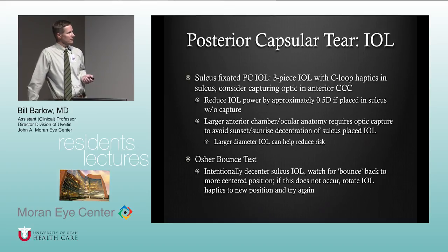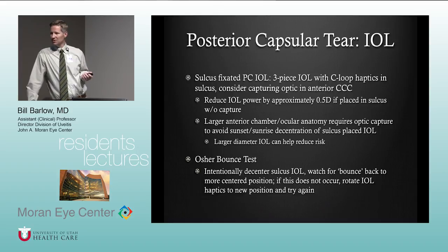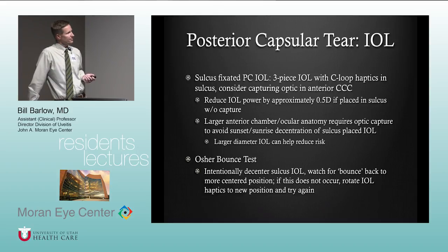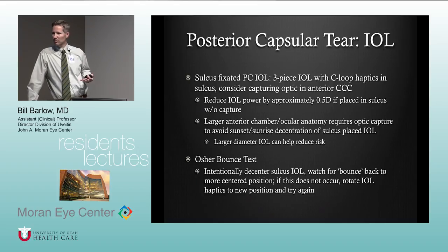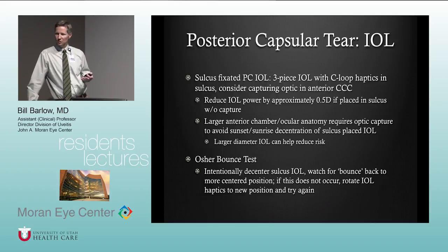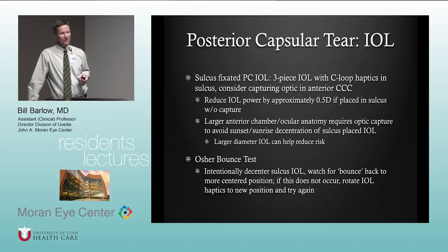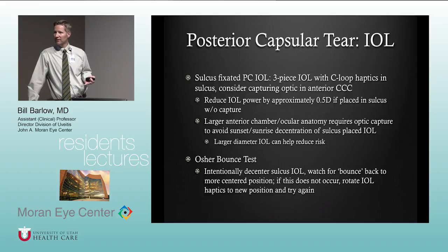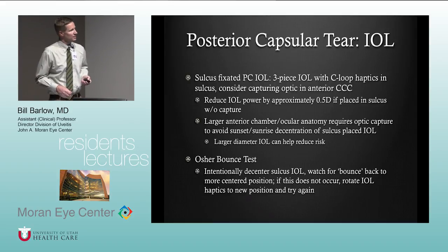Bobby Osher, a surgeon based out of Cincinnati who trained Bob Sione, describes what we call the bounce test. You intentionally de-center the sulcus IOL and watch for it to bounce back into a more centered position. If this doesn't occur, rotate the IOL haptics to a new position and try again. If it's not stable, consider suturing it to the iris. Most of the time in an average eye the anatomy is such that the lens should be fairly stable, but this test is particularly useful for large eyes.